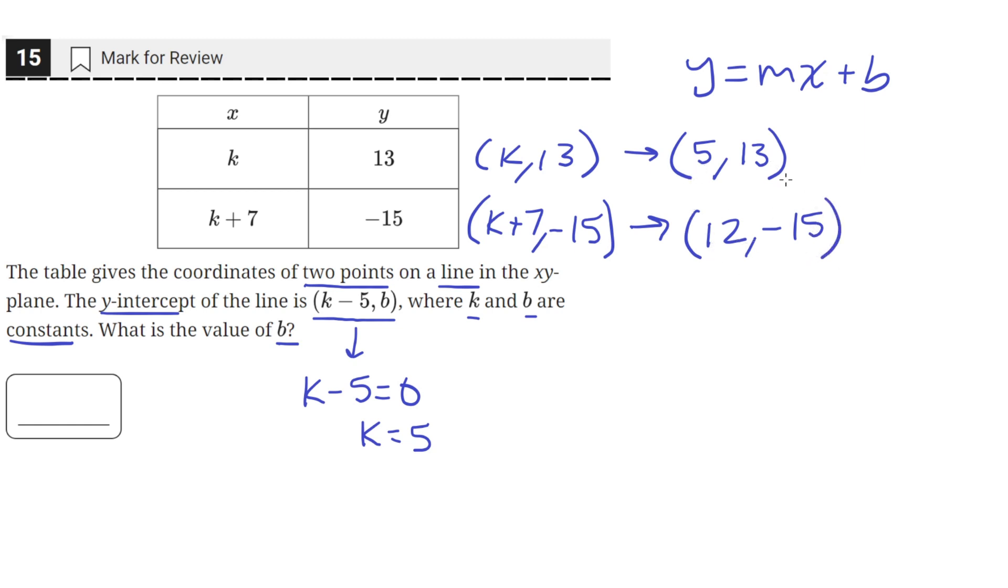So now we have these two points on the line, and we can easily just solve for all the components of the line. To find the slope, we can just find the rise over run between these two points. So we can do 13 minus negative 15 to find the change in y, divide that by the change in x, 5 minus 12,